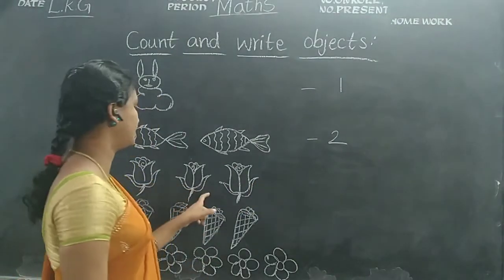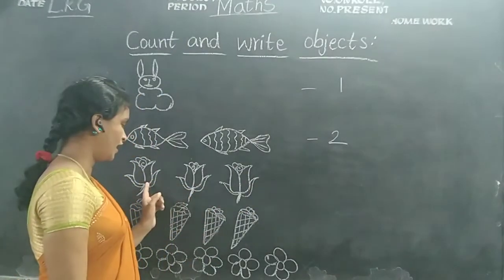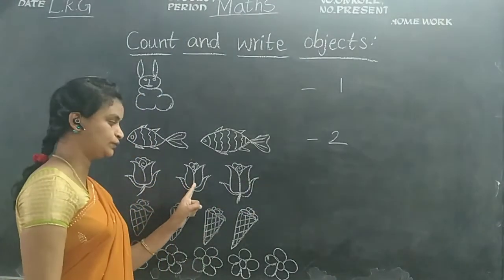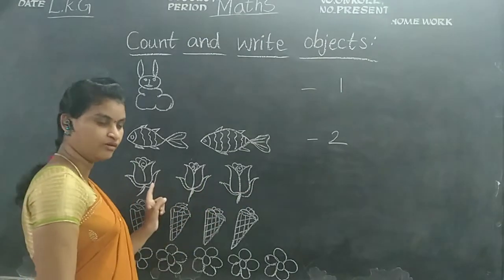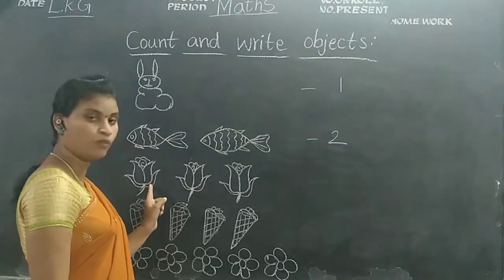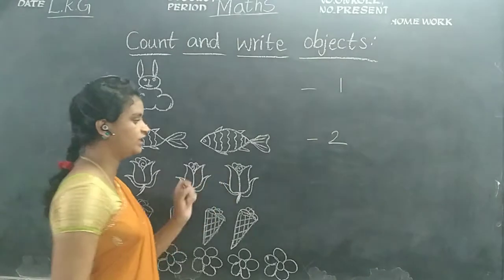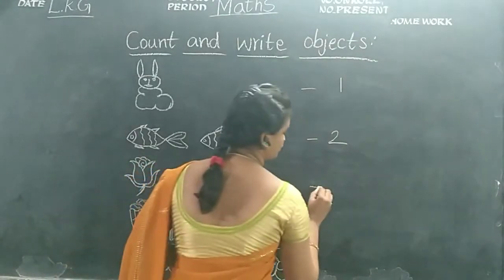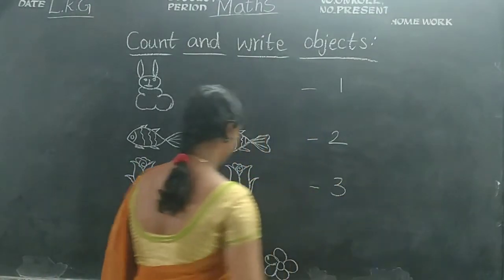How many are there children? Roses. One, two, three. How many are there children? One, two, three. You should write number three.